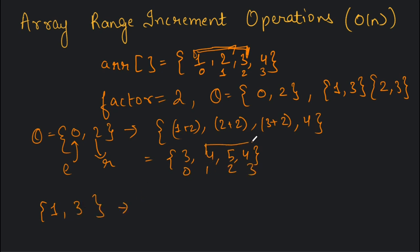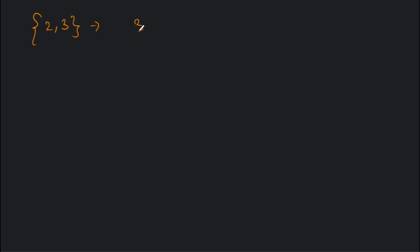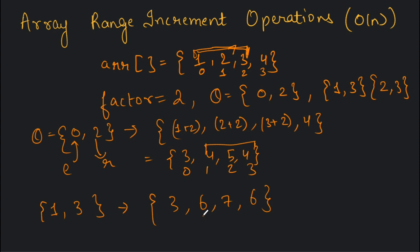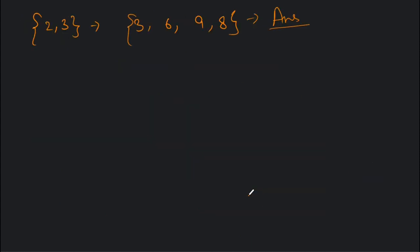For the next query [1, 3], we increase elements at indices one through three: four plus two is six, five plus two is seven, giving [3, 6, 7, 6]. Then for query [2, 3], indices two and three are incremented: seven plus two is nine, six plus two is eight — final result is [3, 6, 9, 8]. This is our answer.